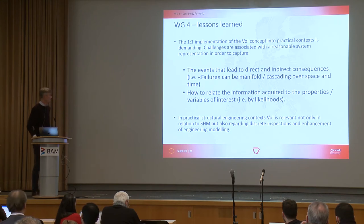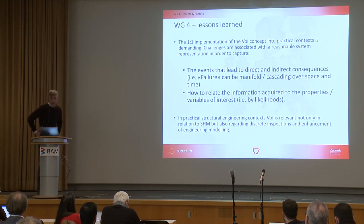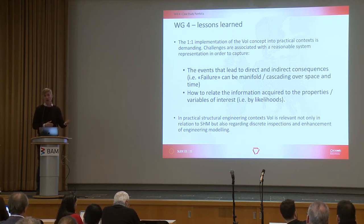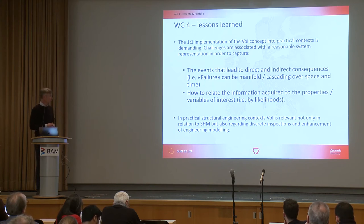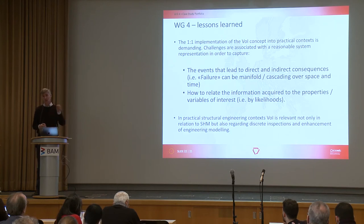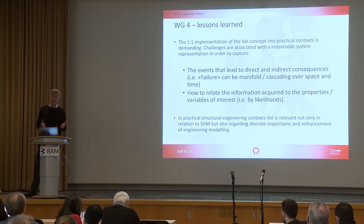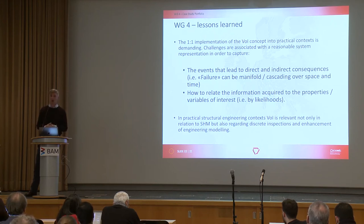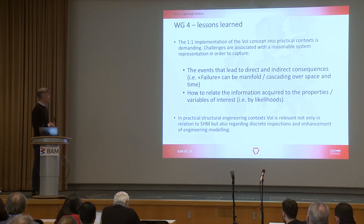Another challenge, as discussed before, is the formulation of the likelihood — how do we link our observations to the property of interest? This is challenging not only because we rarely have enough simultaneous measurements of both the observation and the property of interest to empirically assess the likelihood, but also because we very often measure locally while being interested in more global responses, creating problems at the spatial scale. There are also issues over time.